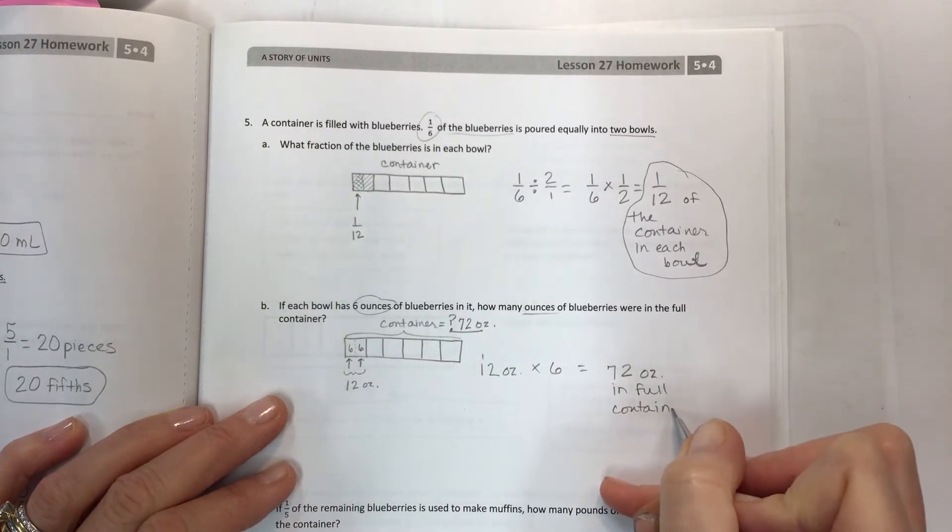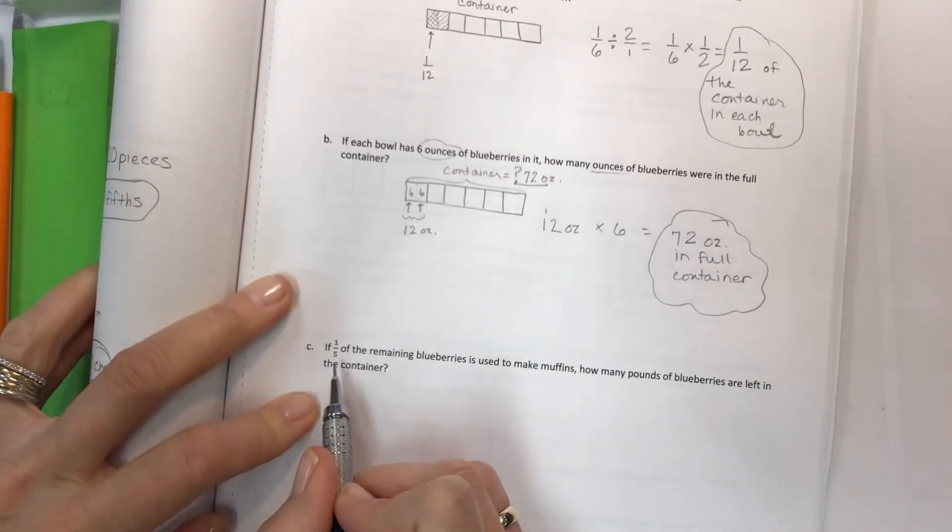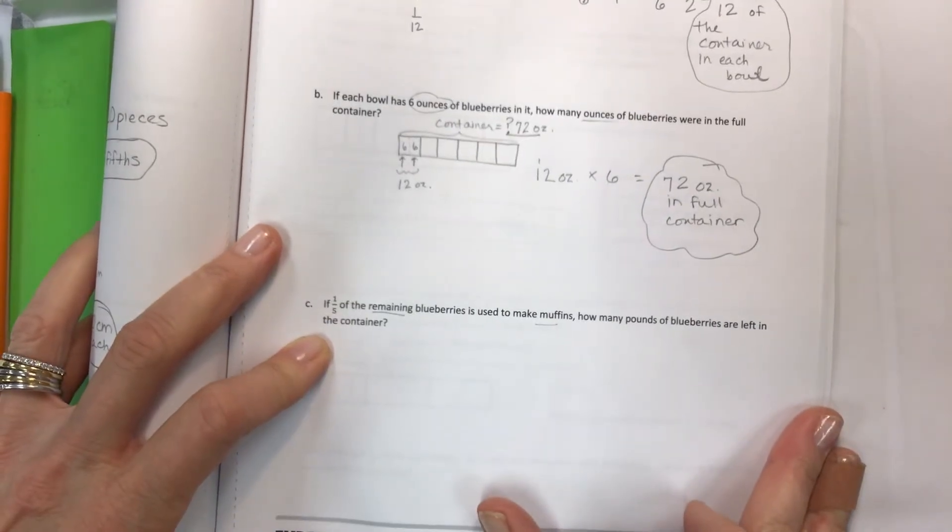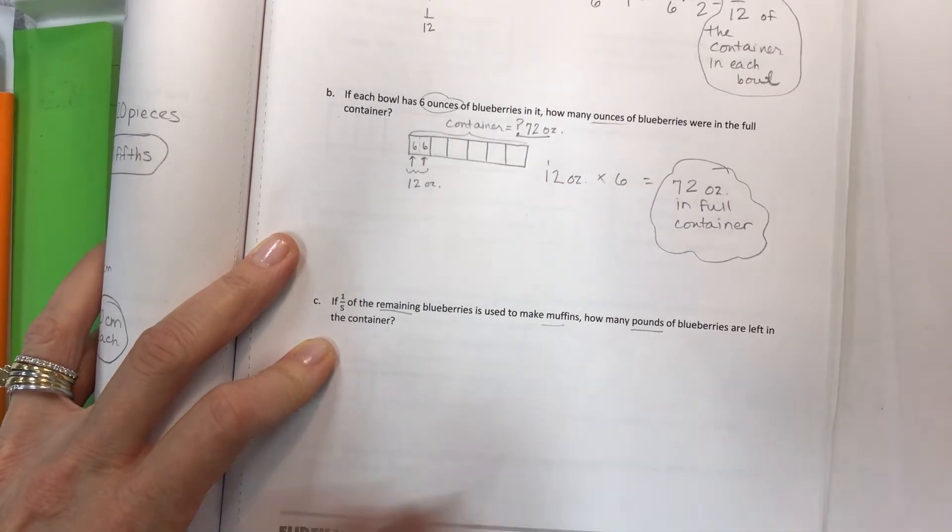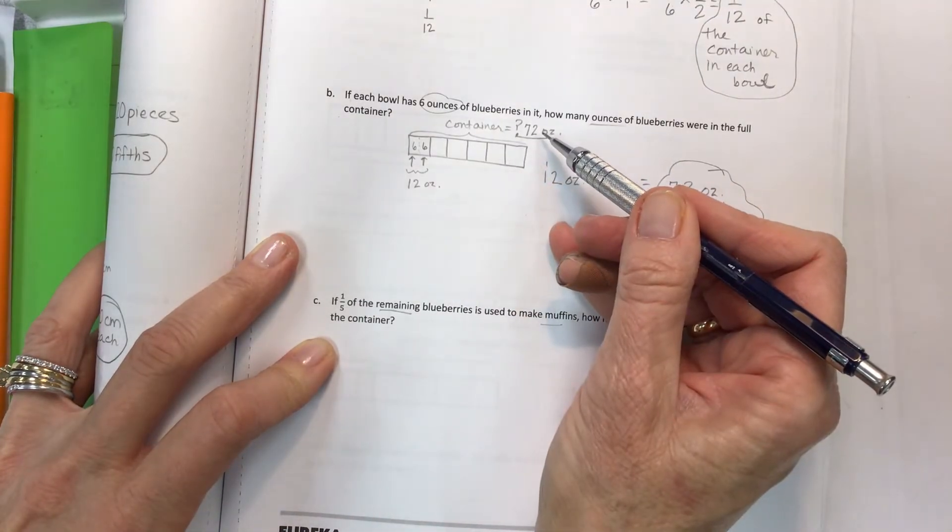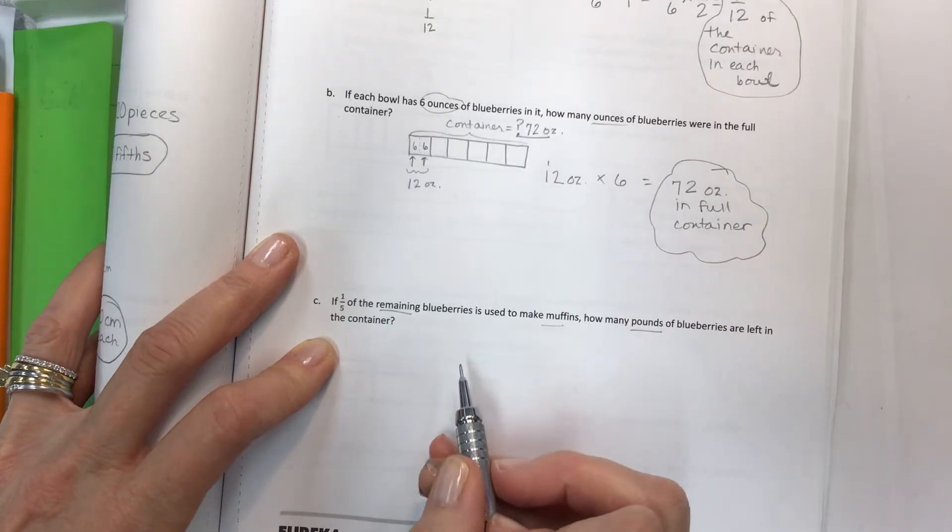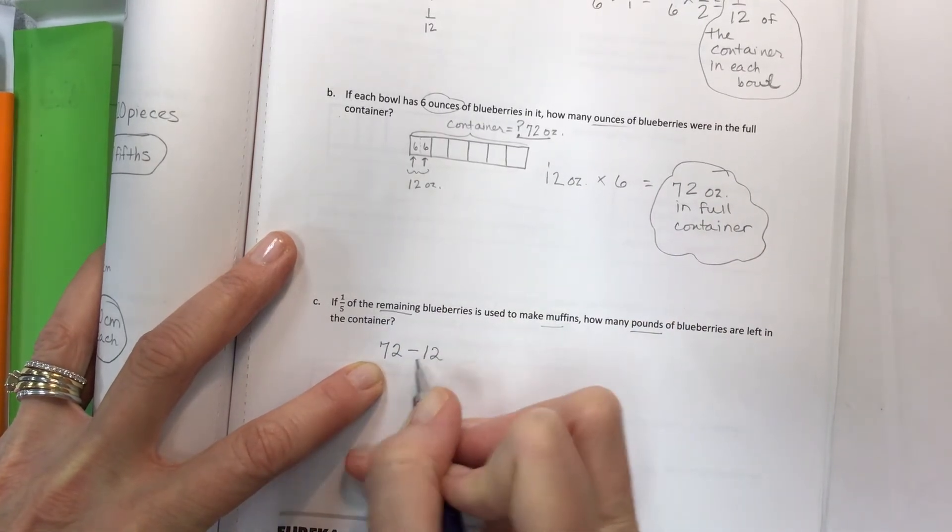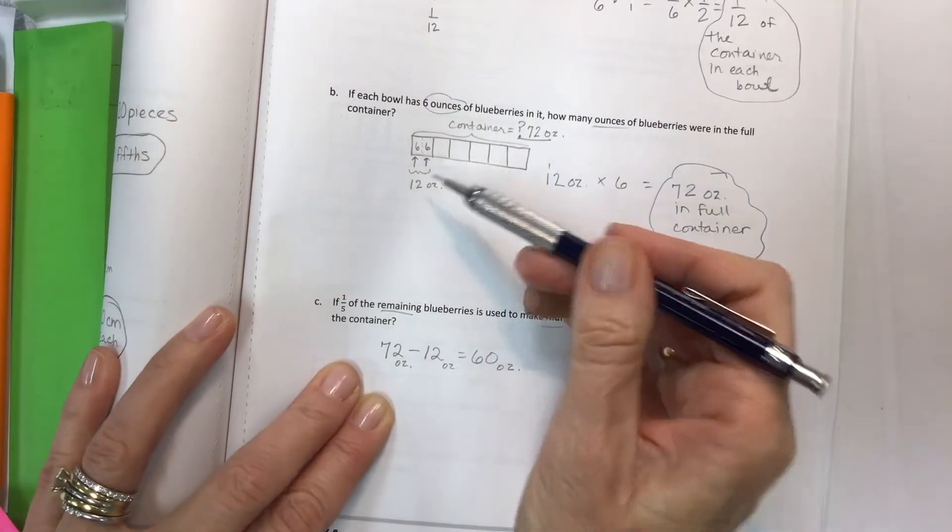Don't forget to click subscribe. And come back again and I will help you with your math. All right, we're on the final letter here. If one fifth of the remaining blueberries is used to make muffins, how many pounds of blueberries are left in the container? So we've got one fifth of the remaining. So now we've got to switch back to pounds from ounces. So I've got 72 ounces in my full container. I've used some for the bowls that they were poured out. So from your full container at 72, we used 12. They're all ounces. You could label it. That's always helpful. So you end up with 60 ounces. That we have to consider.